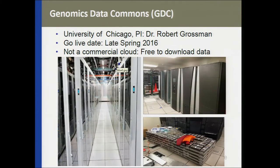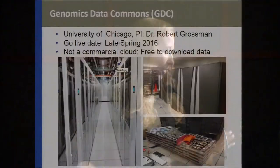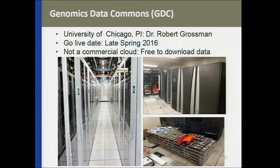A secondary goal of the Genomic Data Commons is to harmonize some of these data standards. All BAMs that go into the GDC will be aligned to one reference, and they will also get the same mutation calling pipeline. The GDC is a contract awarded to the University of Chicago; the PI is Dr. Robert Grossman. The go-live date for full functionality should be around late spring of 2016. It's not a commercial cloud — the data warehouse is physically at the University of Chicago — and one benefit is that data will be free to download.